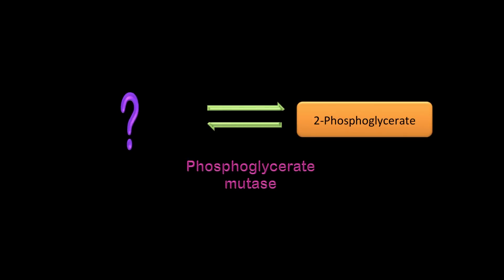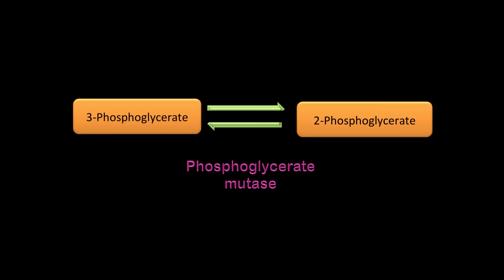Phosphoglycerate mutase has 2-phosphoglycerate as its product, so the substrate is 3-phosphoglycerate. Interestingly, 3-phosphoglycerate is first converted to an intermediate, 2,3-bisphosphoglycerate, which then loses its phosphate on carbon three to give 2-phosphoglycerate.